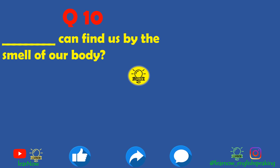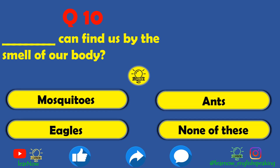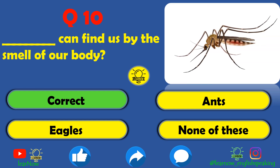Question number ten: who can find us by the smell of our body? The options are mosquitoes, ants, eagles, or none of these. Mosquitoes is the correct answer — mosquitoes can find us by the smell of our body.